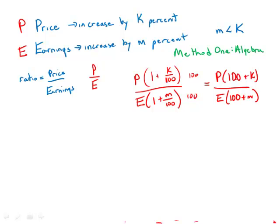What we want to know is the change in these ratios. We have P over E, which is P/E times 1, and we want to compare 1 to this new ratio. What is the percent increase in that ratio?